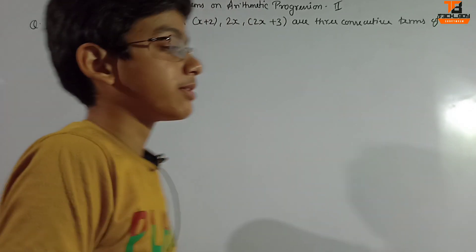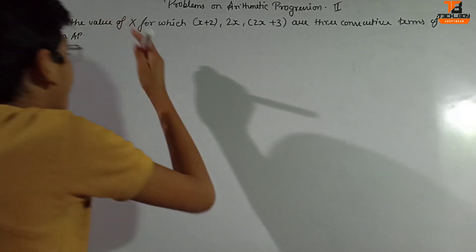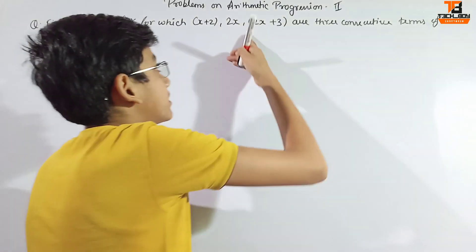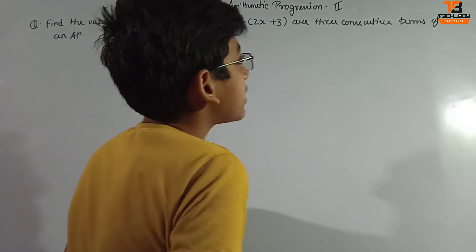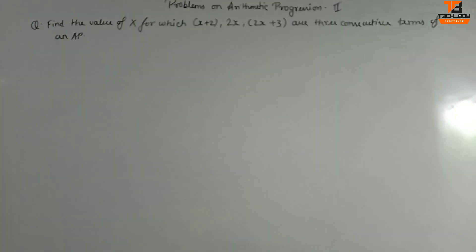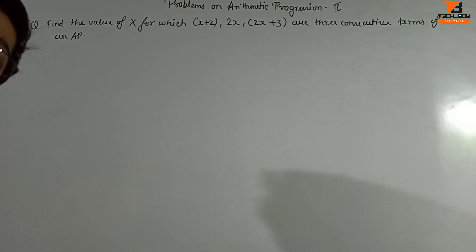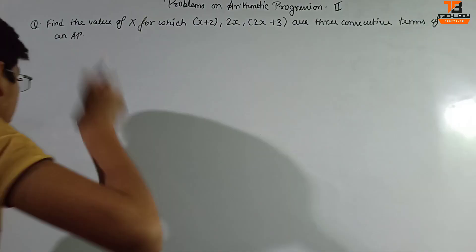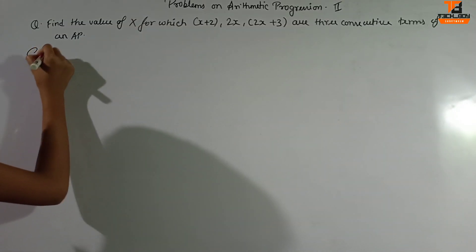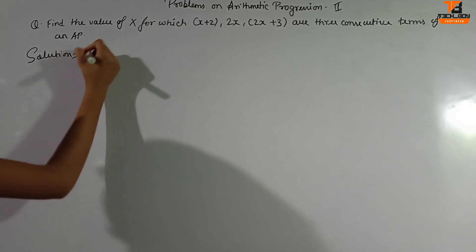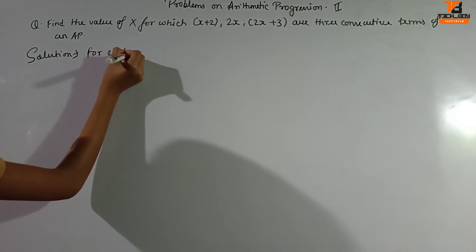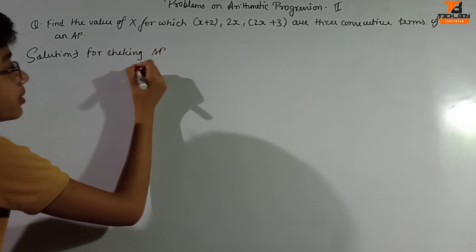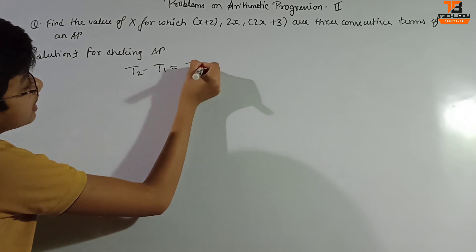Moving towards today's first question: find the value of x for which x+2, 2x, and 2x+3 are three consecutive terms of an AP. To check AP, the condition is t2 minus t1 equals t3 minus t2.